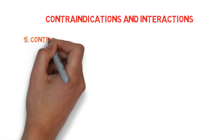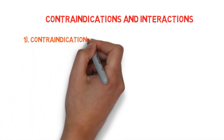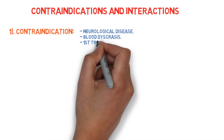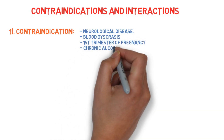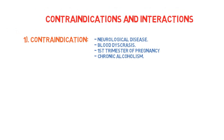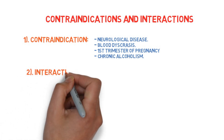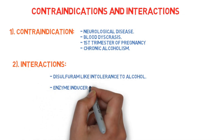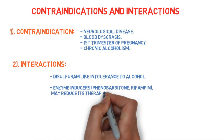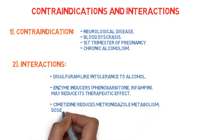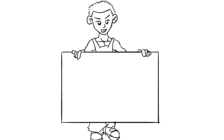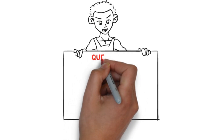Now let's discuss contraindications and drug interactions. The contraindications are: neurological disease, blood dyscrasias, first trimester of pregnancy, and chronic alcoholism. For drug interactions: metronidazole causes a disulfiram-like intolerance to alcohol. Enzyme inducers such as phenobarbitone and rifampin may reduce its therapeutic effect. Cimetidine reduces metronidazole metabolism, so doses may need to be decreased.